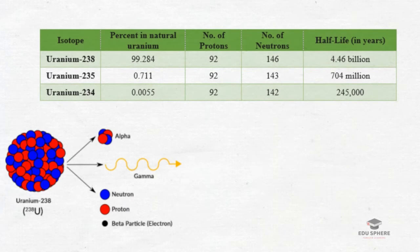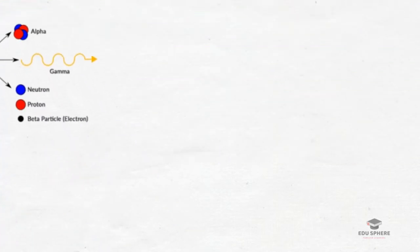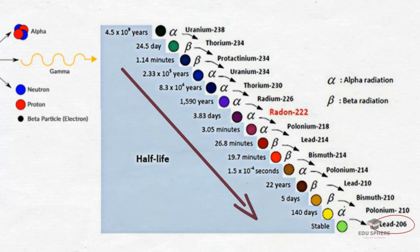As shown in this table, all three variants have the same number of protons but different numbers of neutrons. More than 99% of naturally occurring uranium is U238. This U238 decays to lead-206 through a series of alpha and beta decays — it does not change into lead directly, but undergoes a series of 8 alpha and 6 beta decays, as shown in this figure, until stable lead-206 is finally formed.